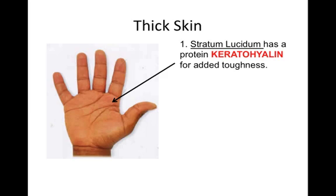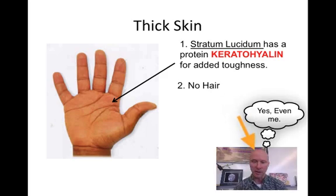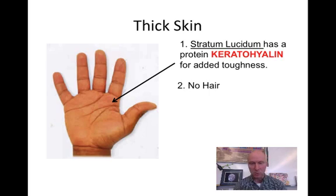If you work with your hands a lot, you'll notice that you get calluses — calluses are just the thickening of the stratum lucidum layer. If you stop using your hands for work, those calluses will eventually fall off and your skin will return to normal thickness, but will retain the stratum lucidum layer. Also, no hair grows in areas of thick skin. We're all about as hairy as one another — the difference is the coarseness or thickness of the hair.